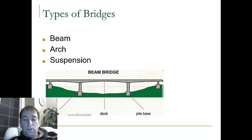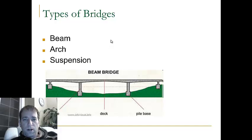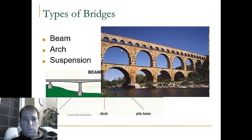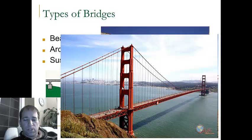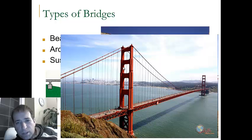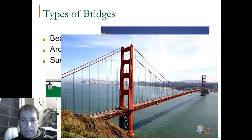Beam bridges are the type of bridges that are used most of the time, and they can be made out of all kinds of materials. Arch bridges were made popular by the Romans — this is a picture of a 2,000-year-old water aqueduct. And suspension bridges are probably the most popular because they can cover huge distances. This is the Golden Gate Bridge in San Francisco.